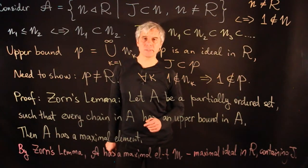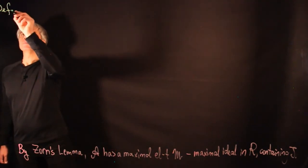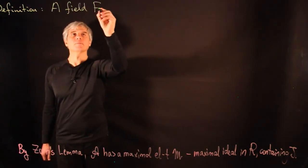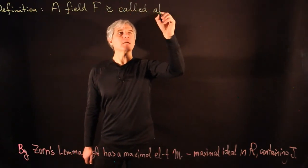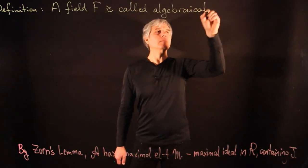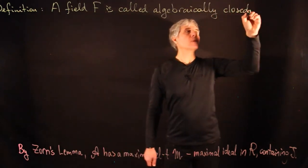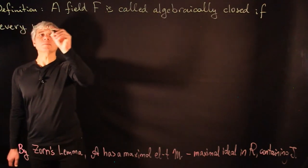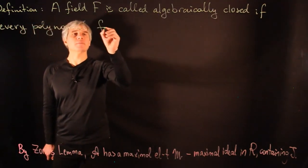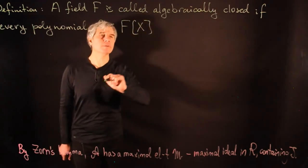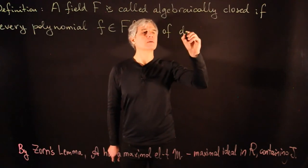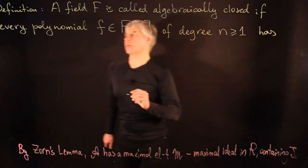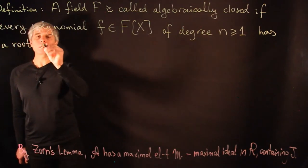Next, let us discuss algebraically closed fields. We begin with the definition. A field F is called algebraically closed if every polynomial F in the ring of polynomials over F of degree N ≥ 1 has a root in the field F.